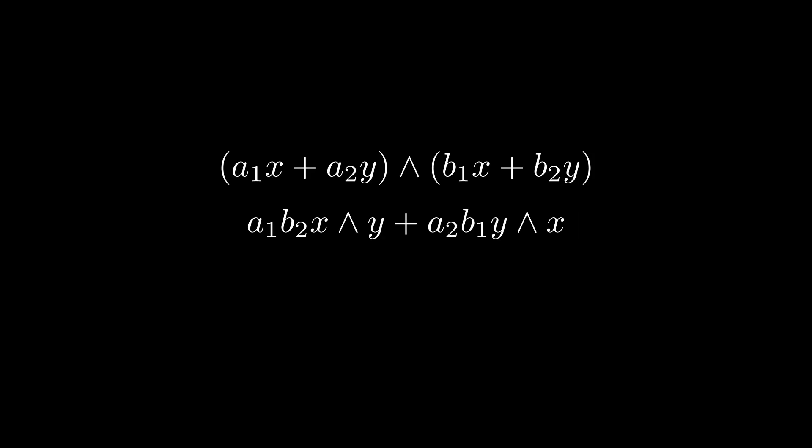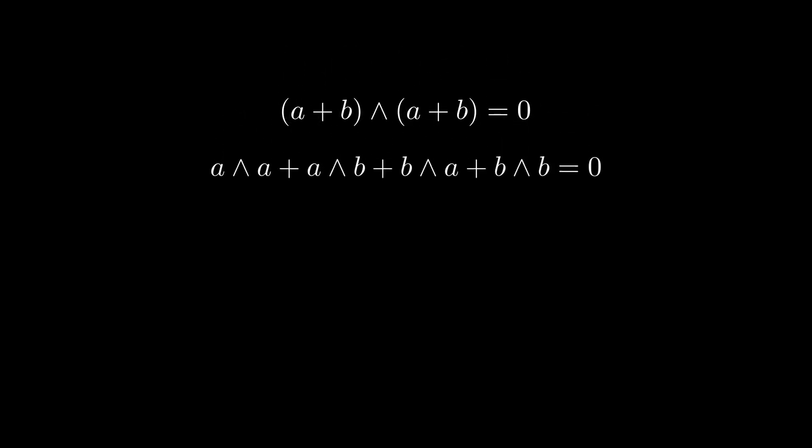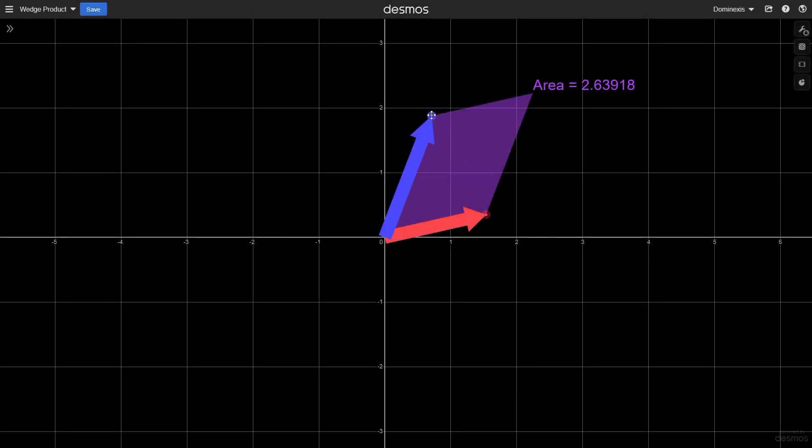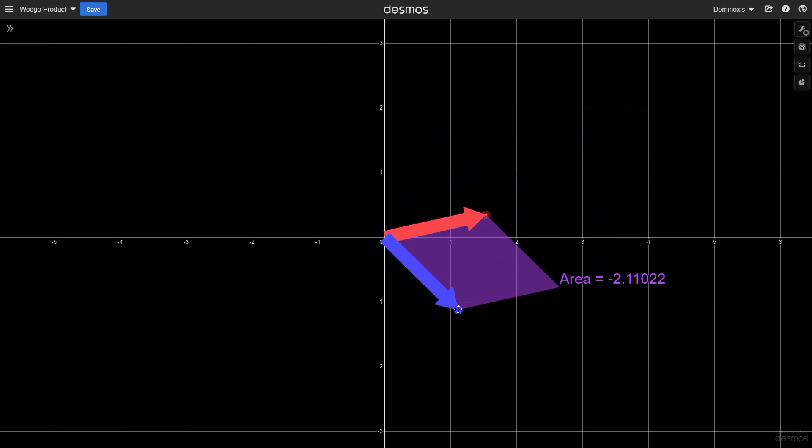Next, we see that we have both x wedge y and y wedge x as separate terms. Ideally, we would have these combined together into a single term. As a consequence of our previous statement, if we wedge the sum of two vectors with itself, we see that it requires the wedge product to be anti-symmetric. If we switch the vectors around, we get a minus sign. So we can switch around the y and the x, and add the terms. What we're left with is a clean formula expressing the wedge product for two-dimensional vectors. The bivector there, x wedge y, is what we call a basis bivector.